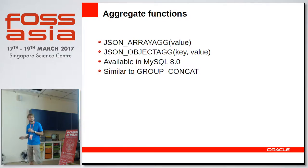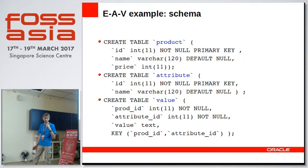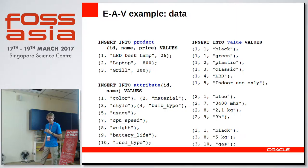It's easier to show by example. Consider the entity-attribute-value scenario: we created three tables — product, attributes a product can have, and values of those attributes. There are three products: lamp, laptop, and grill. Those objects can have properties like color, style, bulb type, usage, CPU, and so on, with values like black, green, plastic, classic, and so forth.